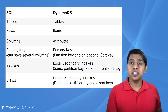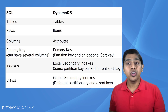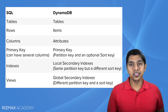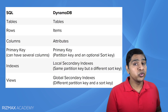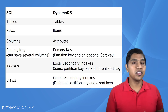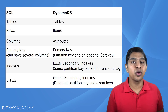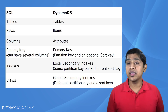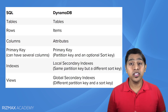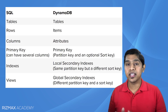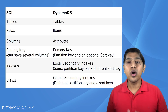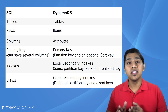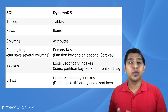Again, in SQL we have indexes, and in DynamoDB we have local secondary indexes. In SQL we have views, and in DynamoDB we have global secondary indexes. Local secondary indexes are indexes where the partition key is the same as that of the primary key, while global secondary indexes are indexes where the partition key is different from that of the primary key.